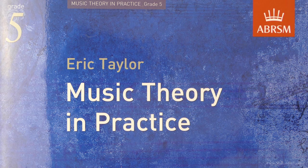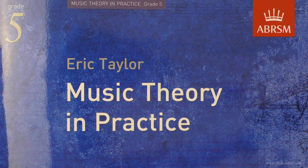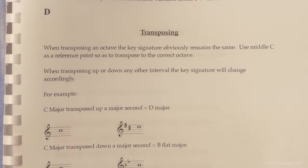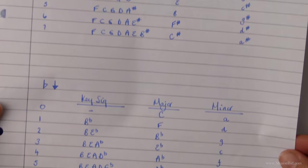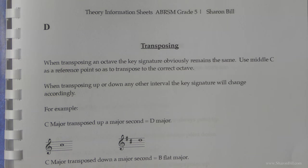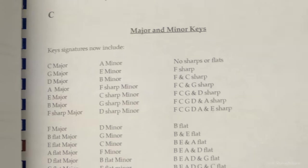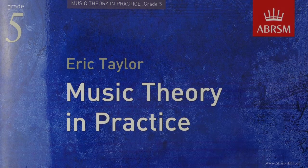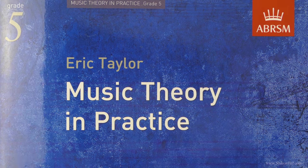And so now we're going to continue with this subject of transposition. If you turn in your PDF document to section D, you may also find it helpful to have your circle of fifths written out or your key signatures, as we're going to need to be making reference to lots of different key signatures. Make sure you've got those to hand or you can turn back in the PDF document to section C and you'll find all the key signatures there as well. If you turn with me in your workbook to page 17, we're going to carry on with this subject of transposition.